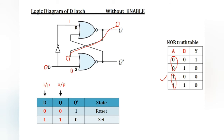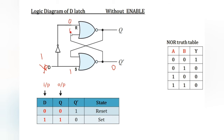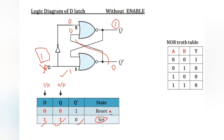Next I am taking 1 as my input. 1 is directly going to S and inverted, so 0 is going to R. One and whatever the input may be results zero; zero and zero results one. D input is 1, S is 1, output is set to 1. D is 1, Q is 1, Q-bar is 0 — this is the set state. Previous one was reset state.